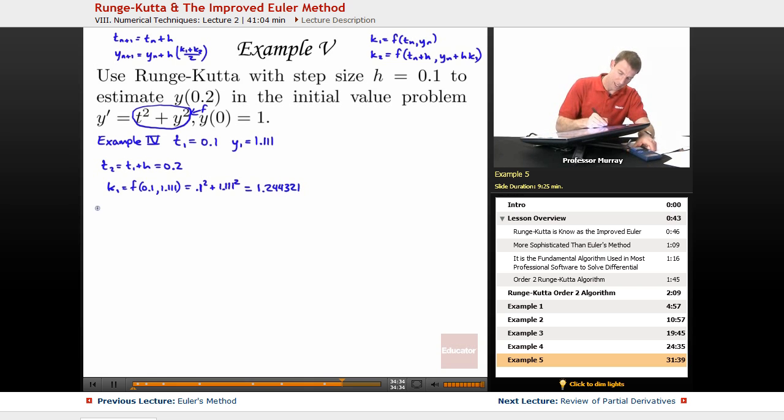I'll save that as a number in my calculator. So, k2 is f of t_n plus h, so 0.2, and now my y_n, that's y1, so 1.111.